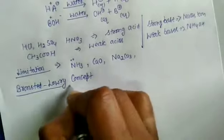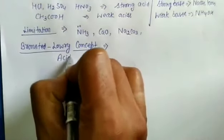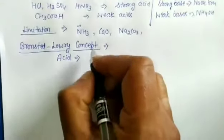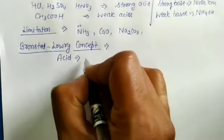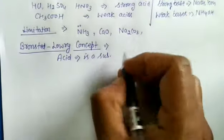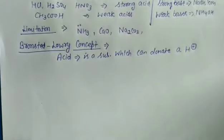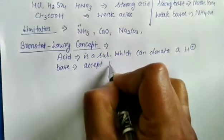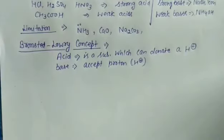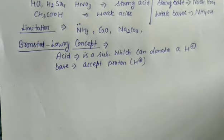To address these limitations, Bronsted-Lowry, another scientist, put forward his theory to explain acids and bases. This is known as the Bronsted-Lowry concept. Bronsted-Lowry said that an acid is a substance which can donate a proton — similar to Arrhenius but without requiring aqueous solution. A base is a substance which can accept a proton.